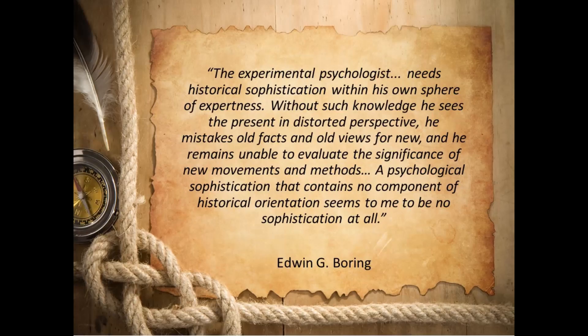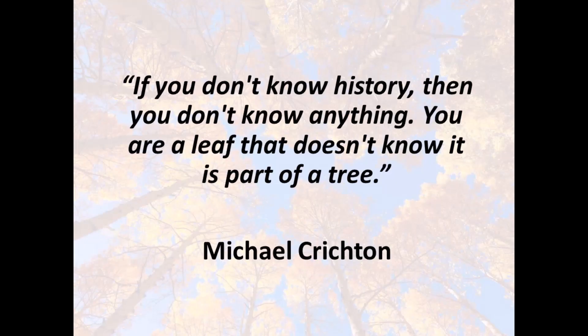Let's look at a quote from one of psychology's most prominent historians, Edwin G. Boring. He summarized this view of history in 1929: "The experimental psychologist needs historical sophistication within his own sphere of expertness. Without such knowledge, he sees the present in distorted perspective. He mistakes old facts and old views for new, and he remains unable to evaluate the significance of new movements and methods. A psychological sophistication that contains no component of historical orientation seems to me to be no sophistication at all." Here's another quote from Michael Crichton, American author and creator of the Jurassic Park series: "If you don't know history, then you don't know anything. You're a leaf that doesn't know it's part of a tree." Take a moment to consider whether you agree with Boring and Crichton, and why or why not.